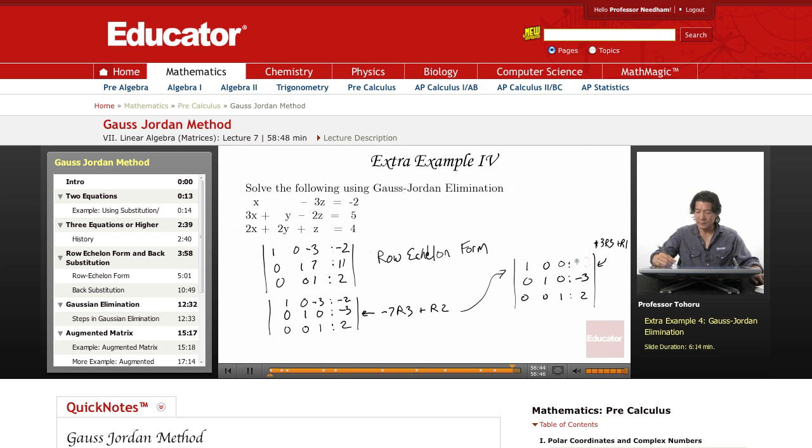That should have been negative because of here. Negative negative. That's all that happened. So to get rid of this we take positive 3 r3, add to r1, so this becomes a 0. This becomes 3 times 2, which is 6, plus negative 2 is 4.